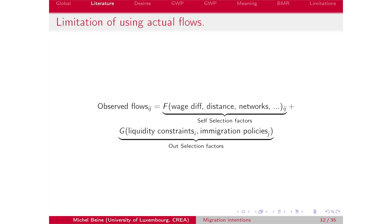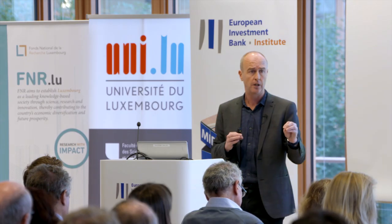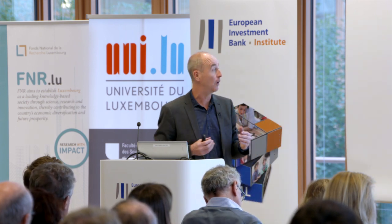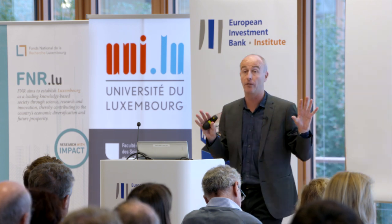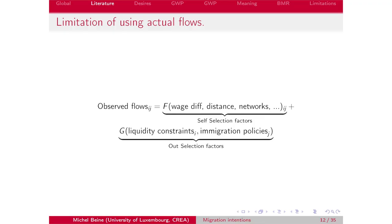But you also have out-selection factors, which are also very important. The self-selection factors emphasized in the literature are the wage differential, the distance, and networks. On top of that, you have out-selection factors — the factors that constrain your choice of destination. Among these, we have at least two types: factors specific to the origin of immigrants, such as liquidity constraints — meaning people don't have the financial means to afford leaving their country.